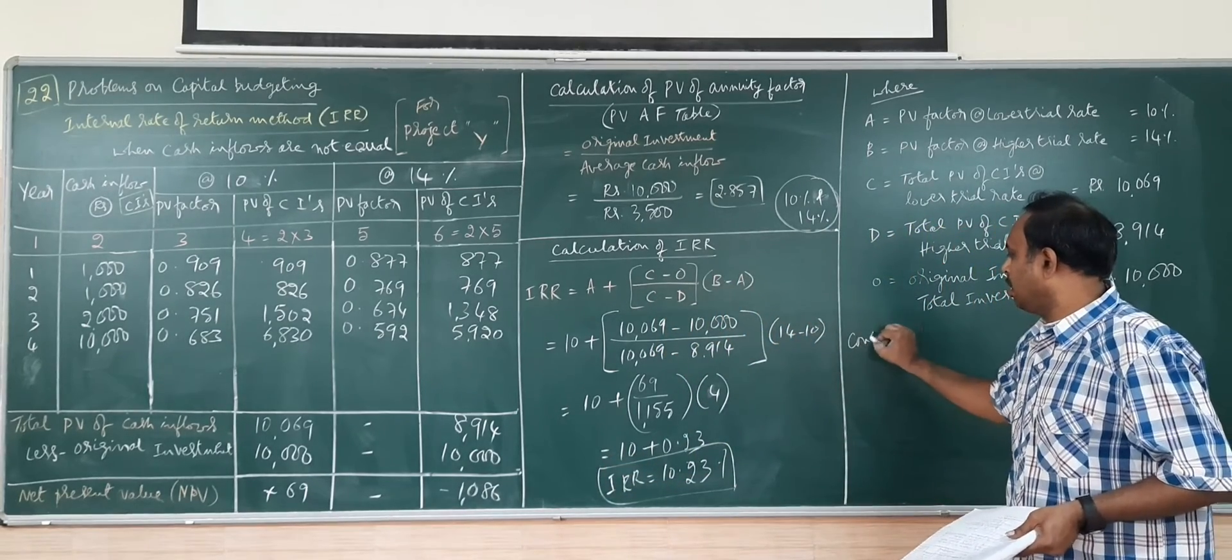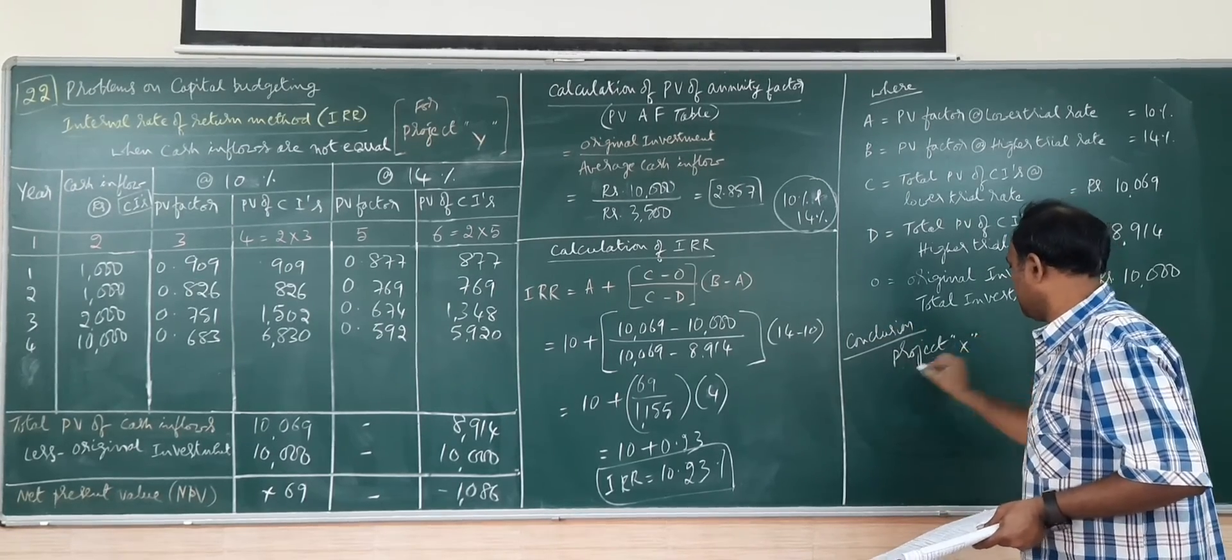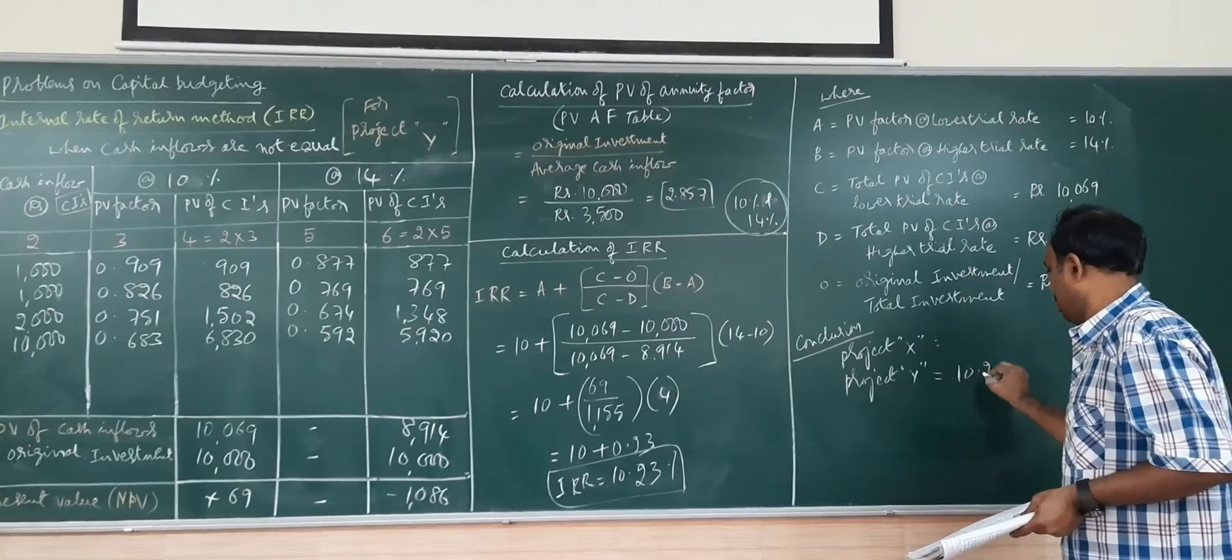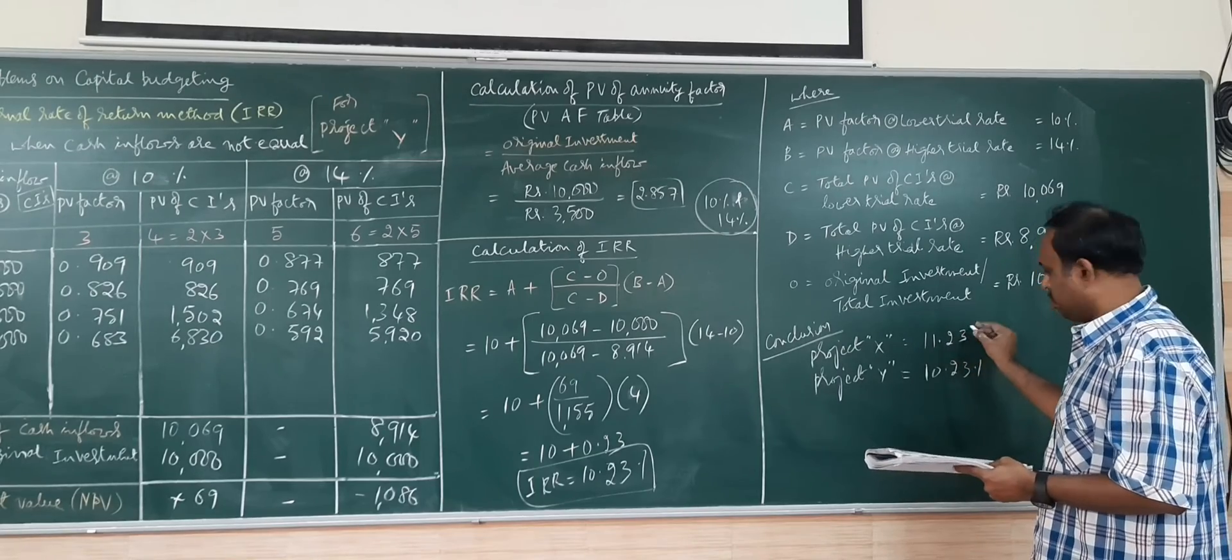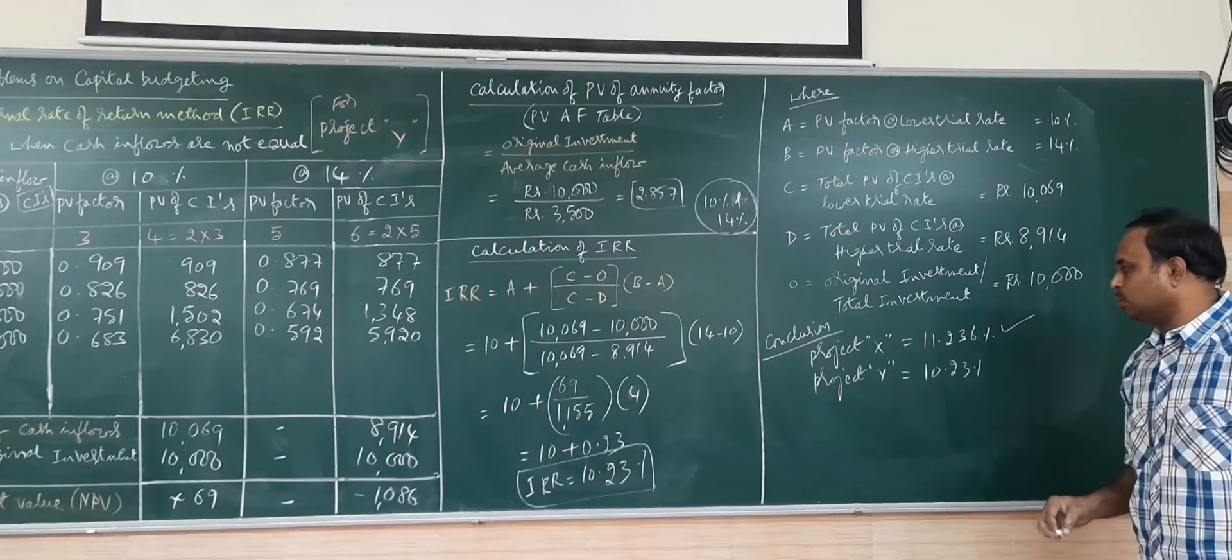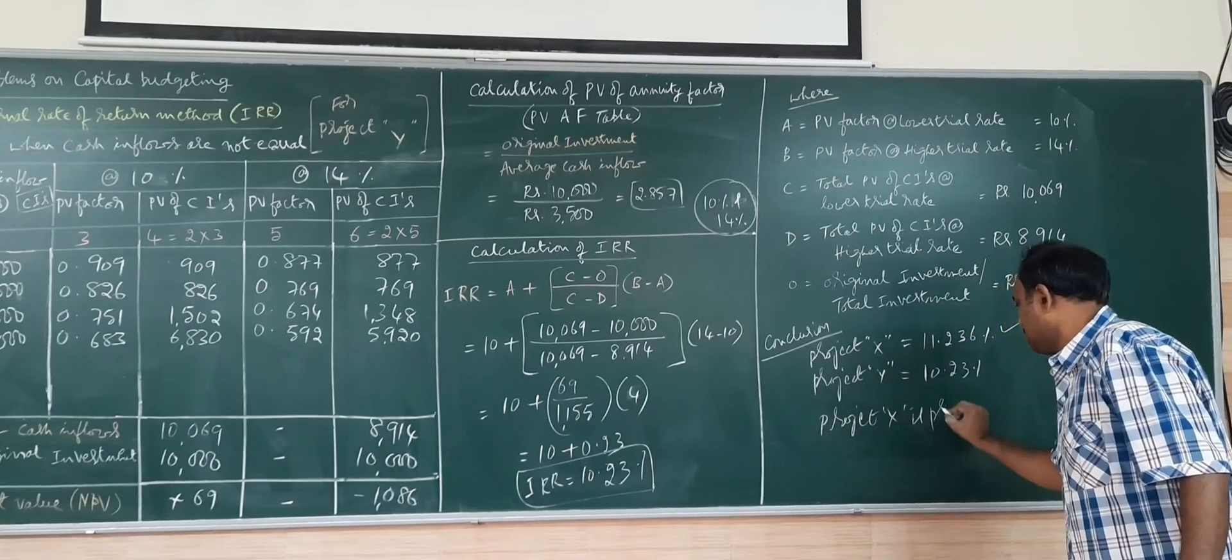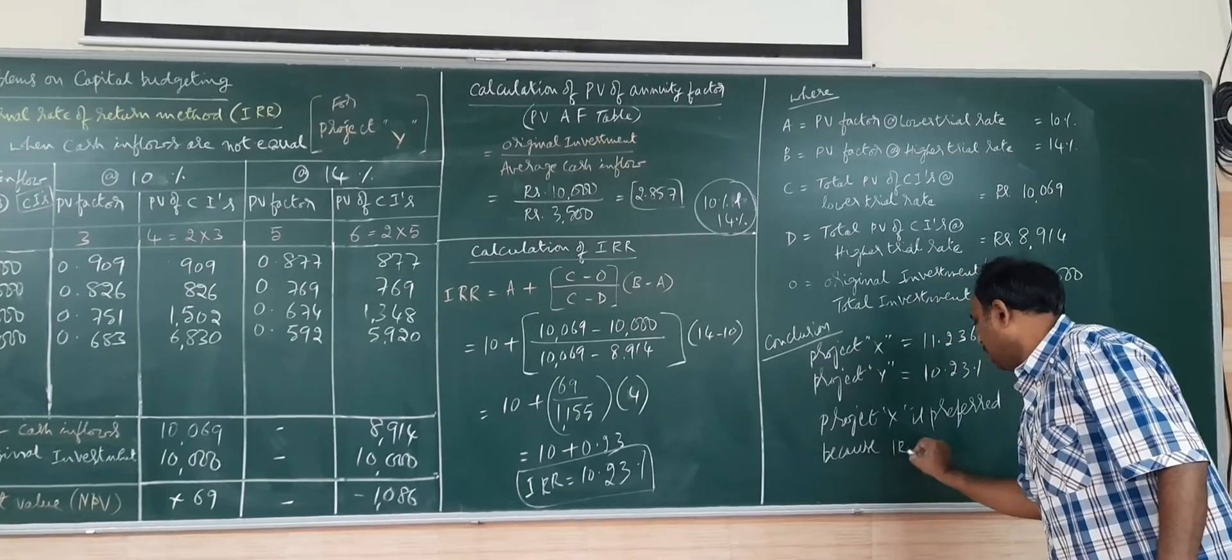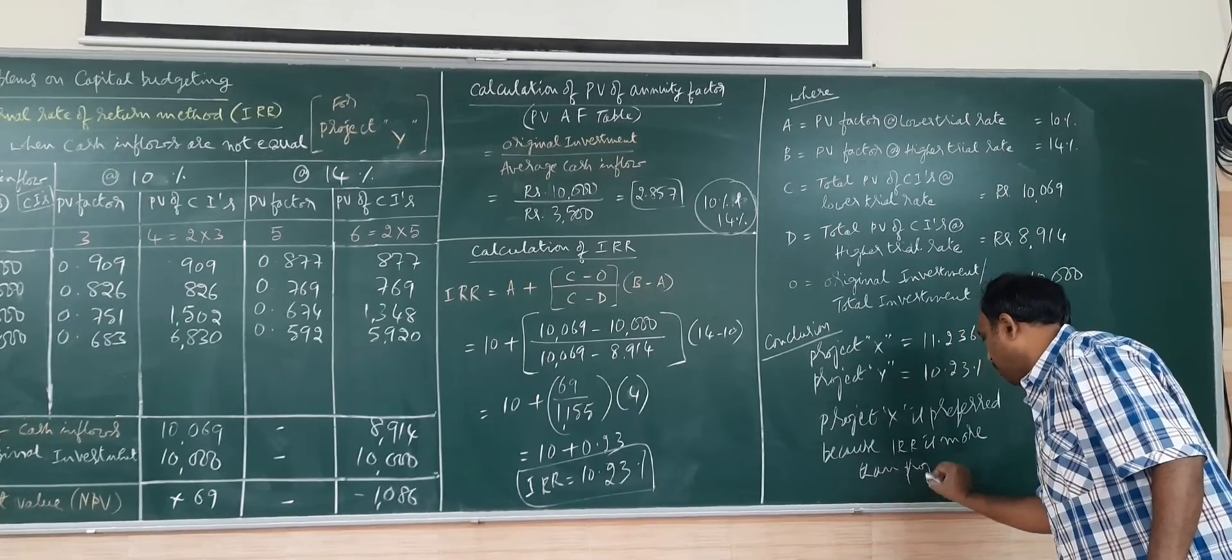Which one to go for? Conclusion. For project X, project Y. Here you see, this was 11.236 percentage. Whichever is higher, we have to go for. 11% is more. Project X is preferred because IRR is more than project Y.